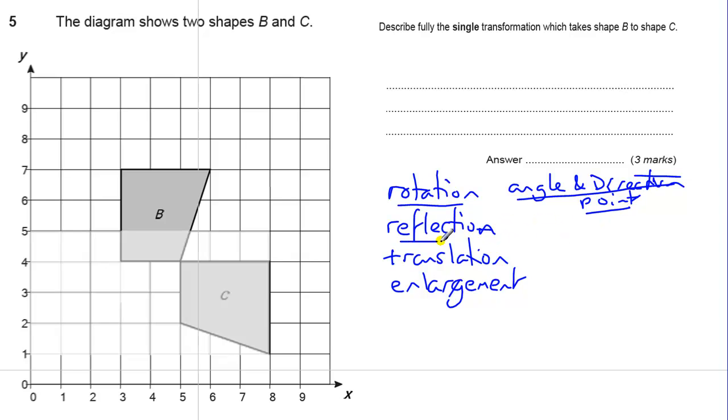A reflection, we're just looking for the name and the line of reflection with equations, something like x equals 4, or y equals 3, or if it's a diagonal one, y equals x, something like that.